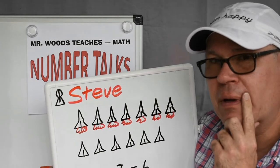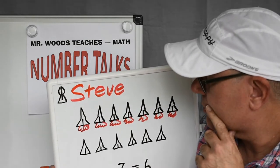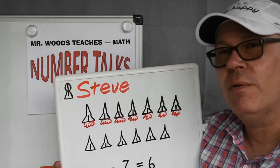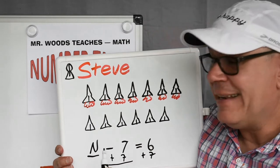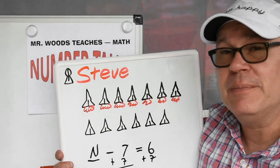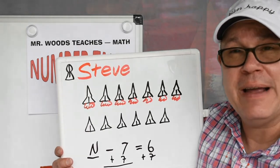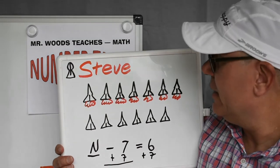Hmm, I wonder what we'd need to do. What would you do, boys and girls? Okay, I put in N. That's the number of rocket ships that Steve, the Rocket Man, had before he launched seven.